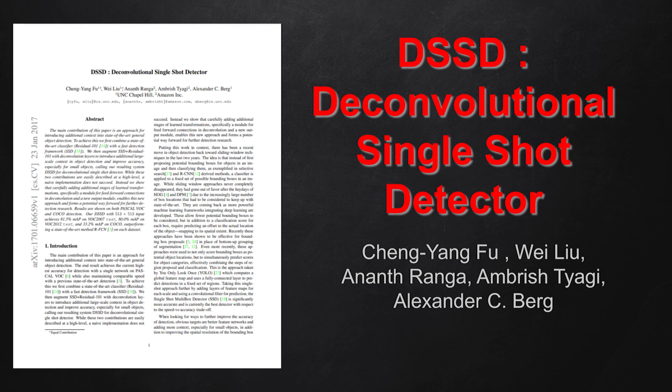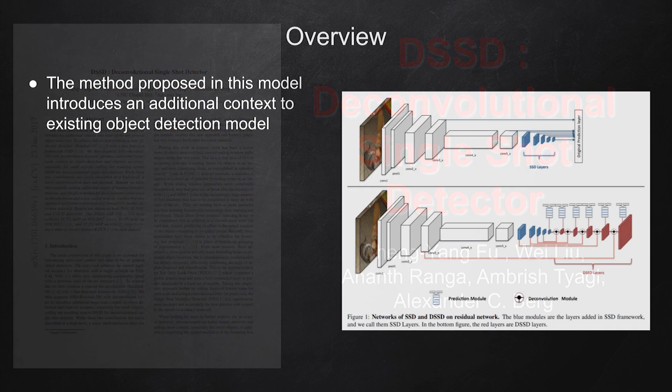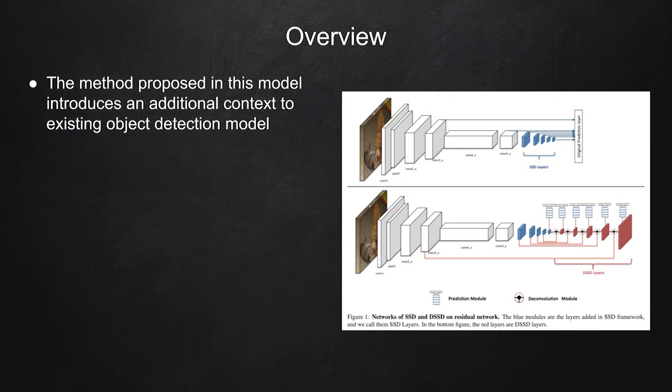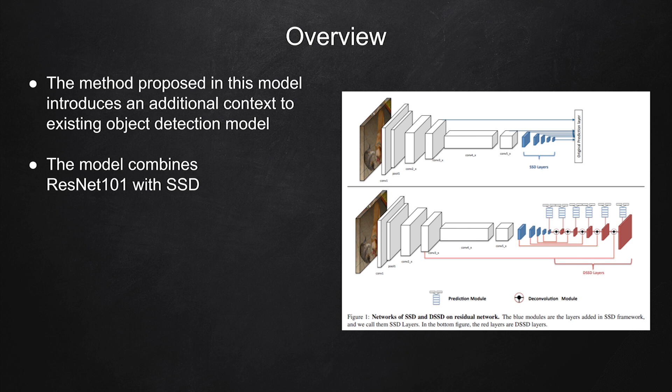Today's paper is DSSD, Deconvolutional Single Shot Detector. The paper introduces a model that uses additional context to existing object detection models. The model uses a backbone of ResNet-101 with a fast object detection framework called SSD, also known as Single Shot Detector.